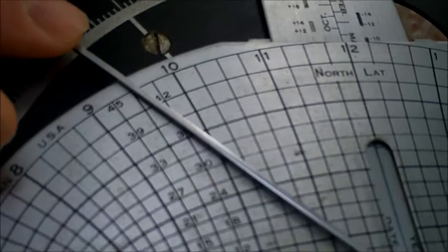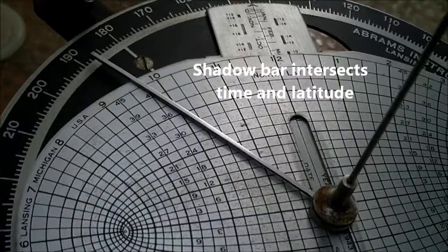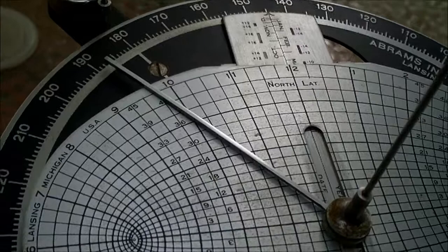As long as I have accurate watch time, local watch time, I can figure out my local apparent time in just a moment or two. I don't need to figure out the azimuth of the Sun.